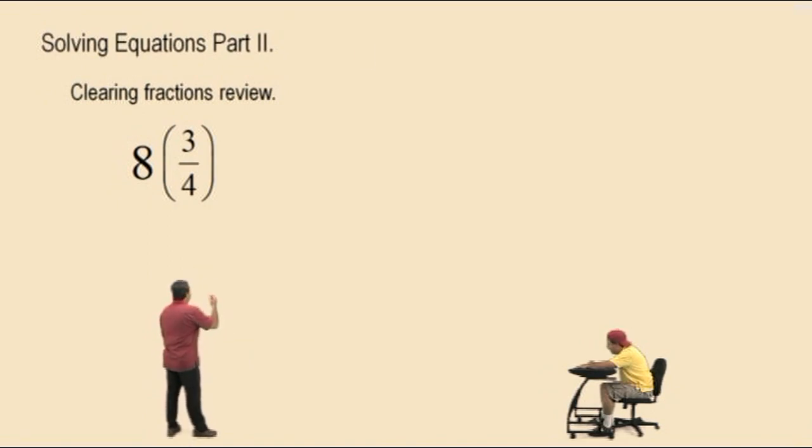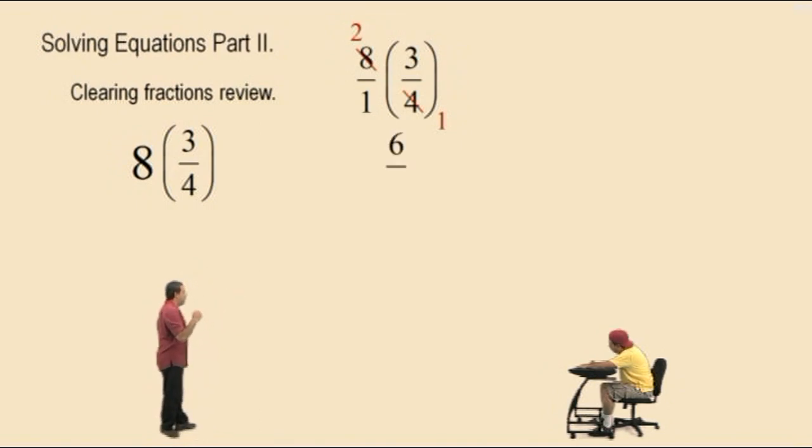Let's go ahead and review from pre-algebra. Let's write the 8 as 8 over 1 and this is being multiplied times 3 fourths. Well, notice the 8 and the 4 will reduce. They have a common factor of 4. 8 divided by 4 is 2. 4 divided by 4 is 1. And notice in the numerator, we have 2 times 3, which is 6. And in the denominator, it's 1 times 1, which is 1. Anything divided by 1 is itself, so we can disregard that 1 in the denominator and the answer is 6.